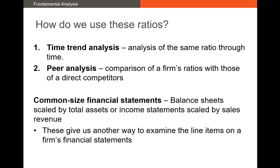So how do we use ratios? There are two primary ways. We can use time trend analysis, where we look at the same ratio through time and see how it changes, or we can use peer group analysis, where we compare a firm's ratios with those of its direct competitors. There is one additional way called common size financial statement analysis, where we scale the financial statement by the largest line item — total assets for balance sheets and total sales revenue for income statements.